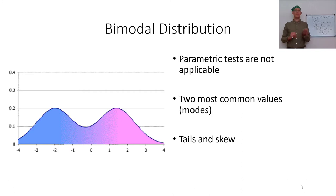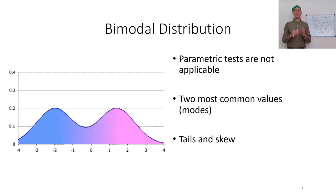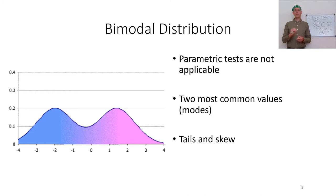The tails and the skew also matter. The tail is how much error — how many standard deviations you get before you actually capture all the data, so how long that tail is. The skew is depending on whether it's swerved to the right or to the left, and those are also going to violate assumptions of parametric tests. So skewed distributions, distributions with exceedingly long tails, and bimodal distributions are all not applicable for parametric tests.